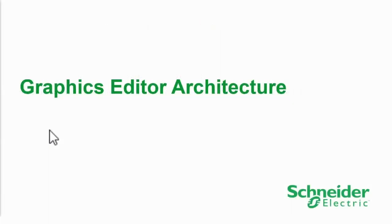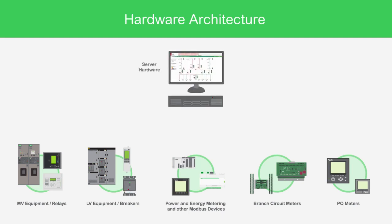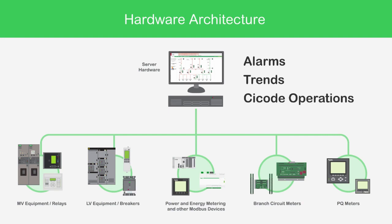Before we can get into how to build graphics pages, it's important to understand how data flows from the hardware up through the server software and finally arrives at the client. The basic hardware architecture should be familiar to you by now. Data is generated by the equipment, whatever that may be. The server, which may consist of multiple physical machines, connects to that equipment and reads the data using its supported communication protocols. The server then compiles the data into alarms, trends the data for later access, and performs sci-code operations to analyze the data.